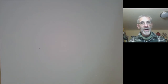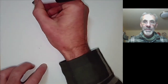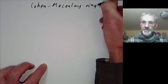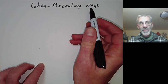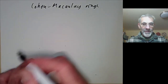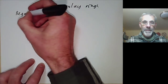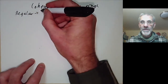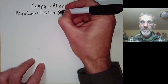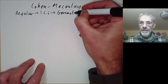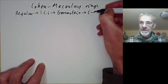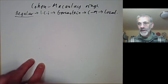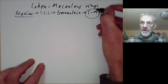This lecture is part of an online course on commutative algebra and will be about Cohen-Macaulay rings — more precisely, Cohen-Macaulay local rings. Last lecture we were looking at regular local rings, and we mentioned a couple of lectures ago that there was a sequence of other conditions: local complete intersection rings, Gorenstein rings, Cohen-Macaulay rings, or arbitrary local rings. This lecture we're going to discuss Cohen-Macaulay rings.